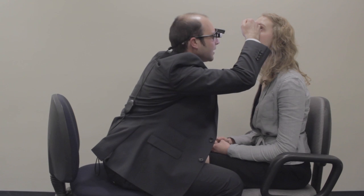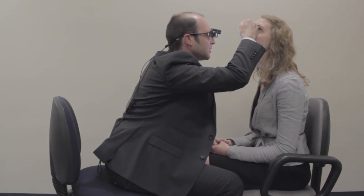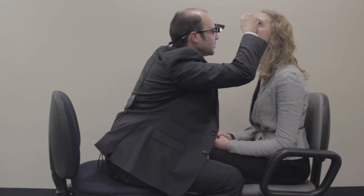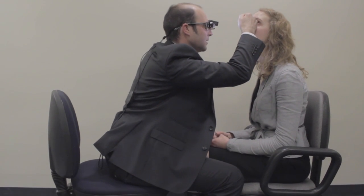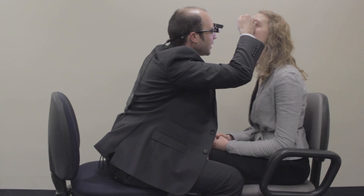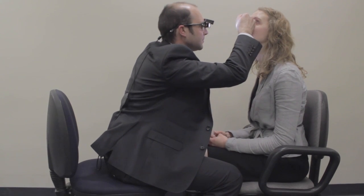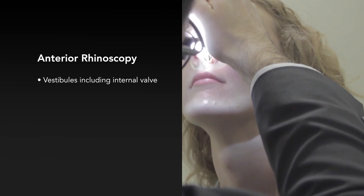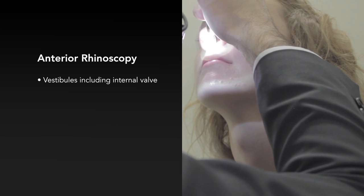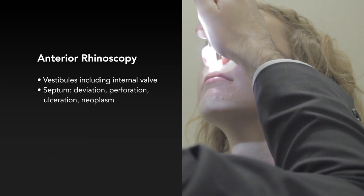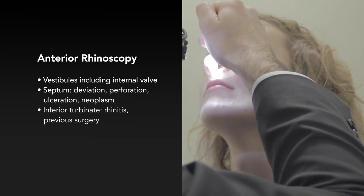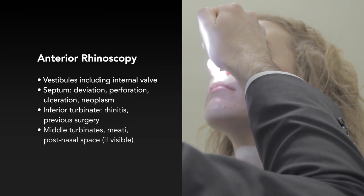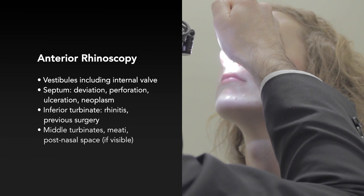The internal nasal valve is not narrowed. The septum is straight. The inferior turbinate is not grossly inflamed or congested, neither is the middle turbinate. There is no obvious mucopus or polyps. The left nasal vestibule is also not inflamed; the nasal valve is not narrowed. The nasal septum is straight with no spurs. The inferior and middle turbinates are normal without inflammation or hypertrophy. There is no mucopus or nasal polyposis.